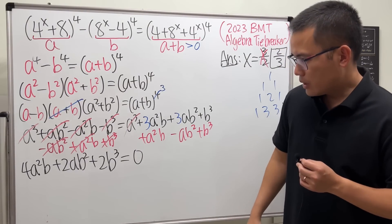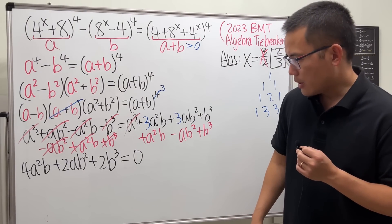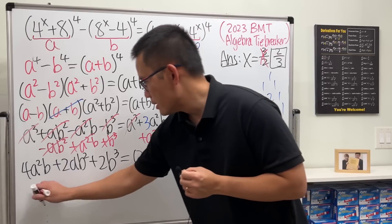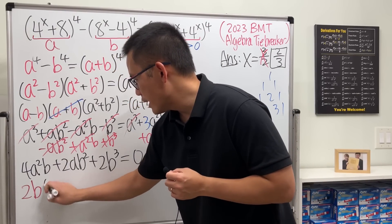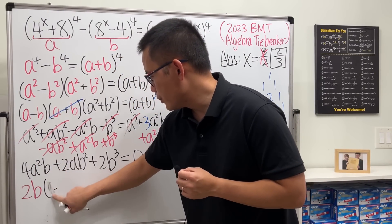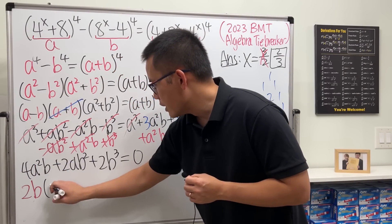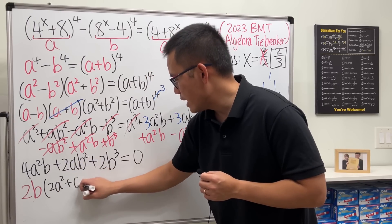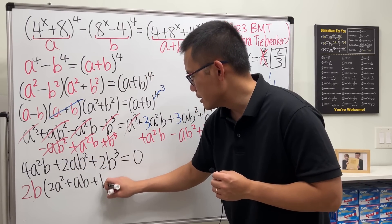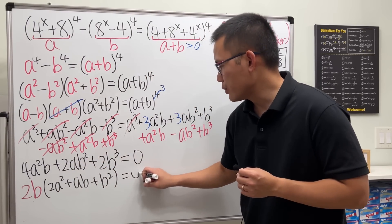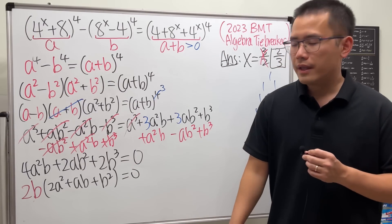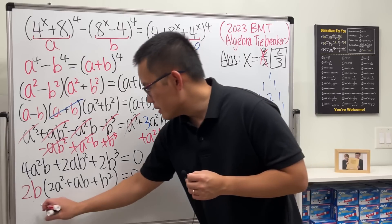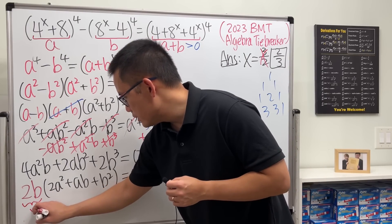We can factor out 2b from the right side: 2b times (2a squared plus a·b plus b squared) equals zero. We have a product equal to zero, so either 2b equals zero or 2a squared plus a·b plus b squared equals zero.